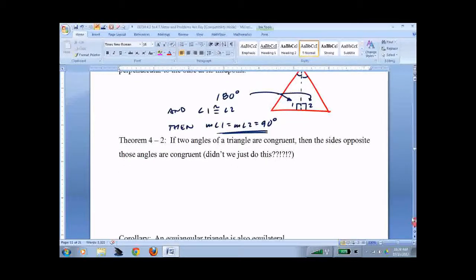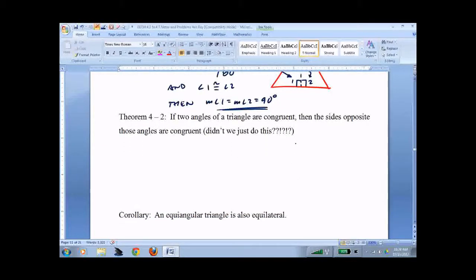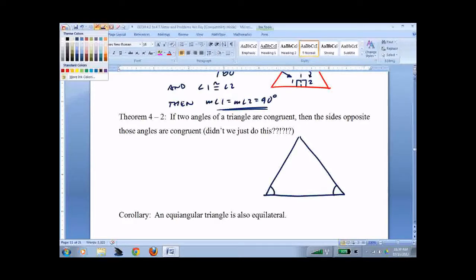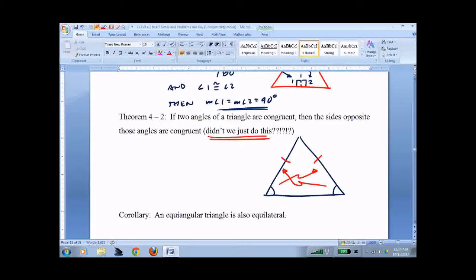Now we do something slightly different. If two angles of a triangle are congruent, then the sides opposite them will be congruent. Didn't we just do this? No, we did not. We did if two sides are congruent, then the angles are congruent. What do we call that when we do one one way and the other the other way?